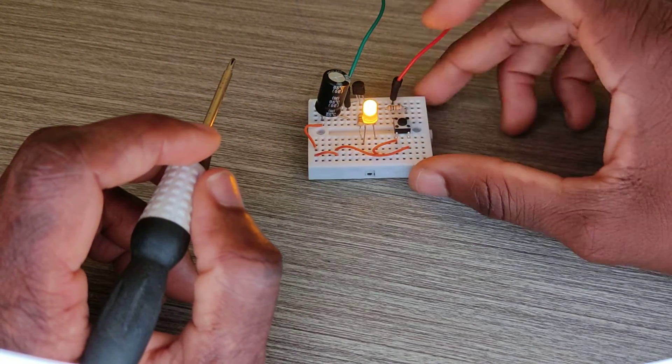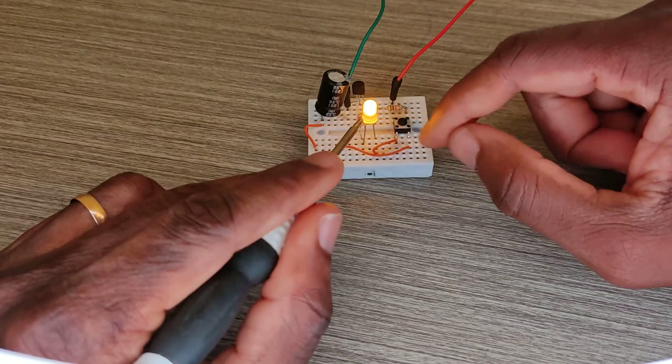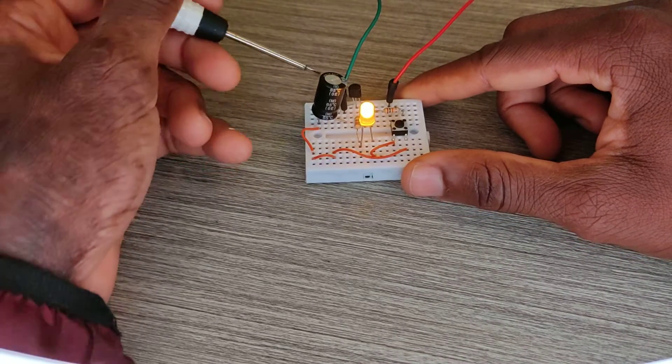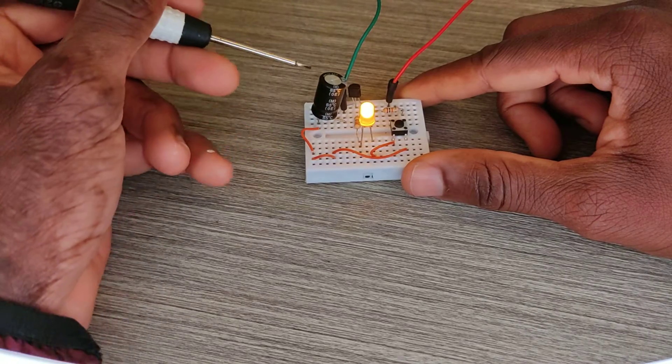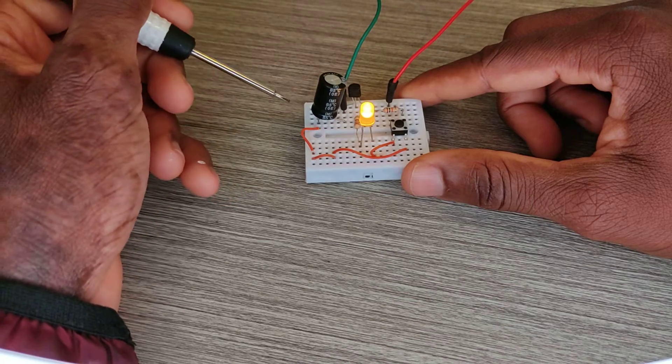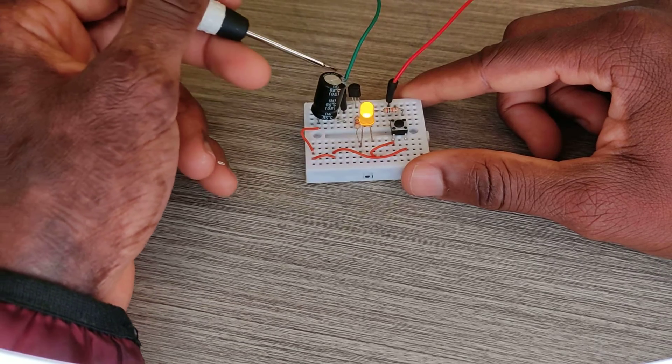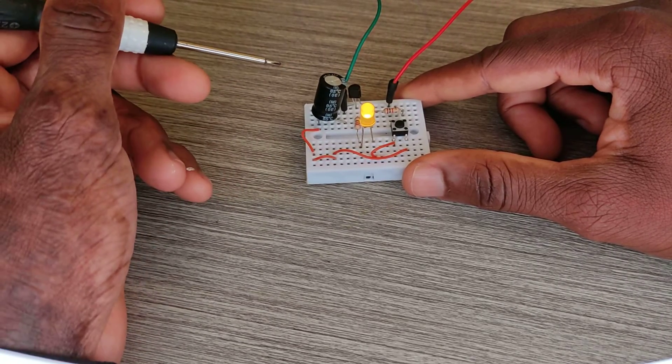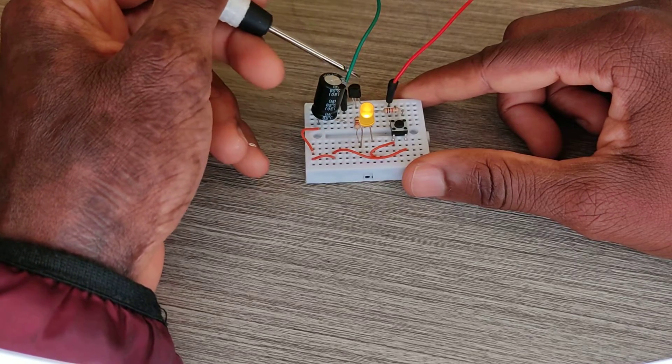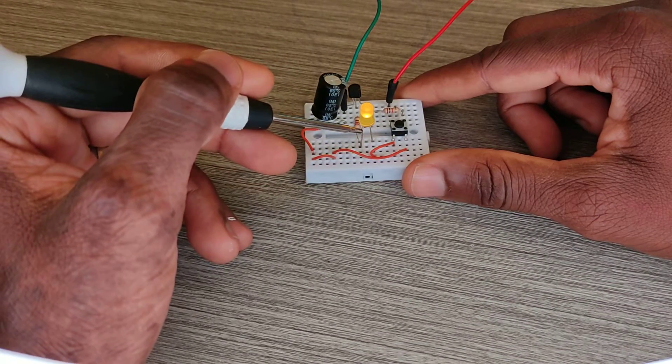When I release it, it's always on because now the capacitor is feeding the transistor with current flowing from my capacitor to this transistor. The transistor allows the LED to be always on.